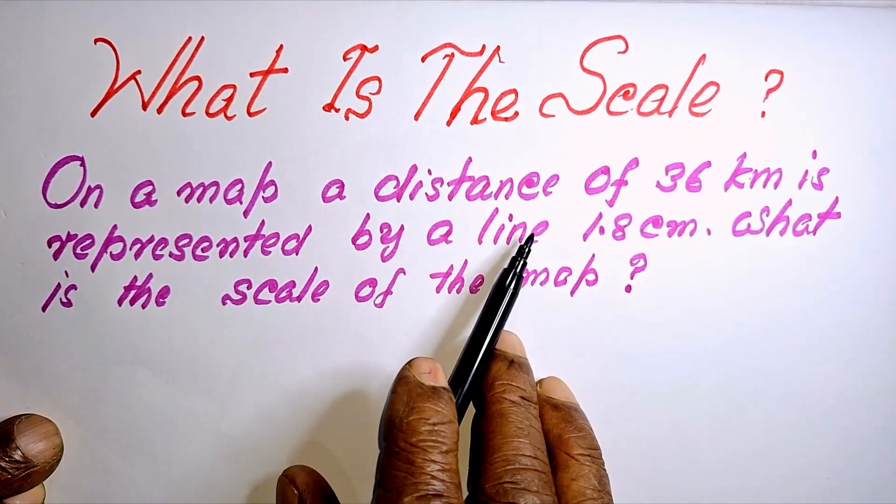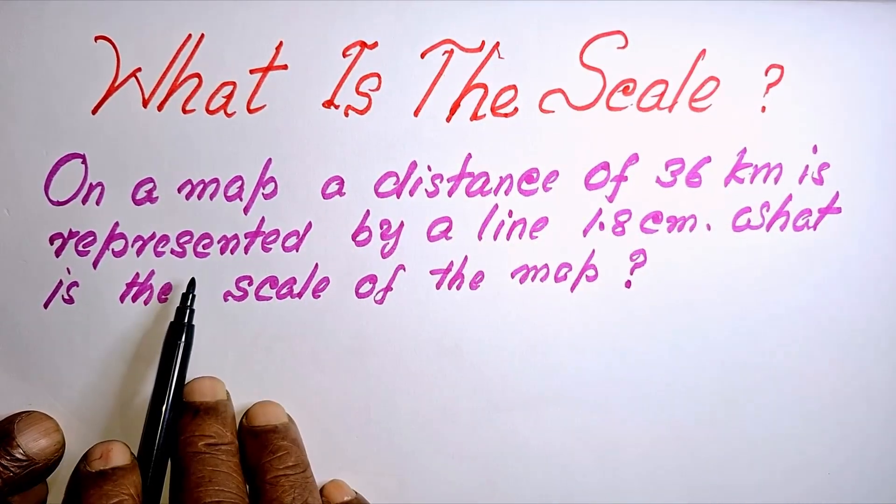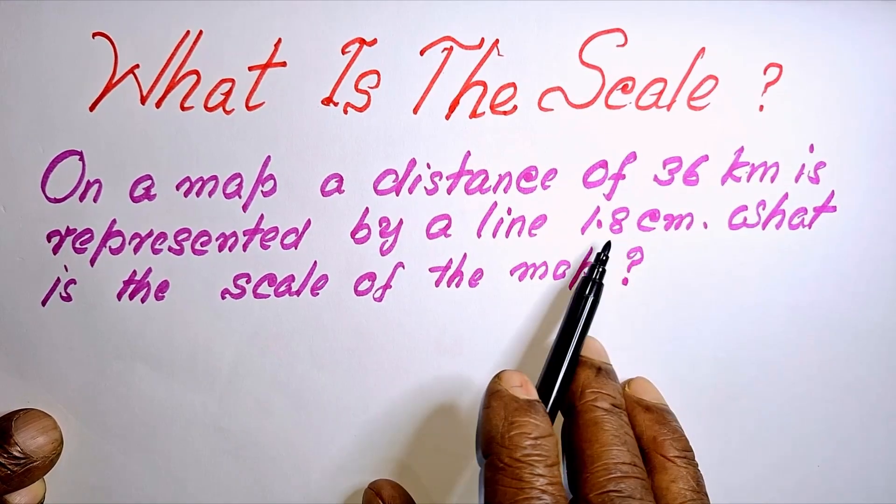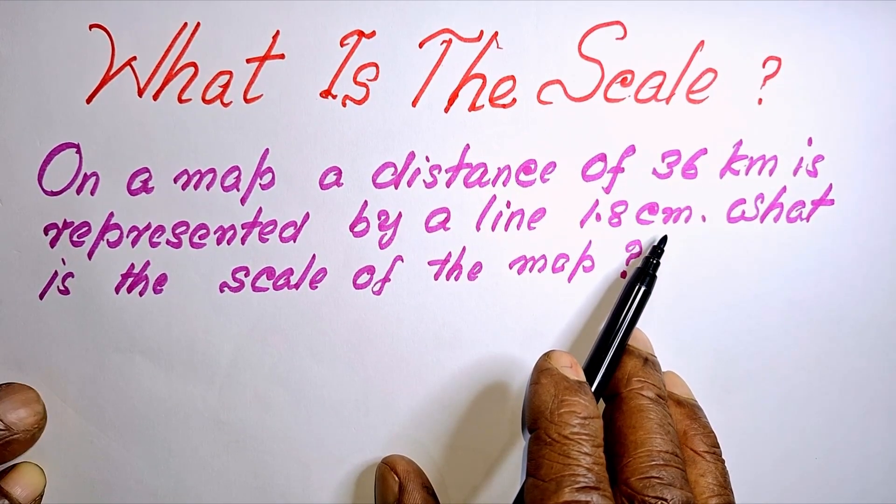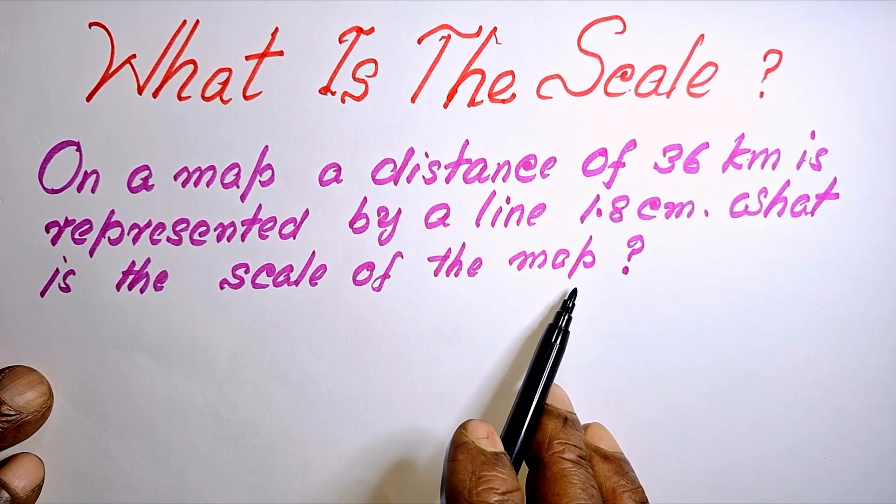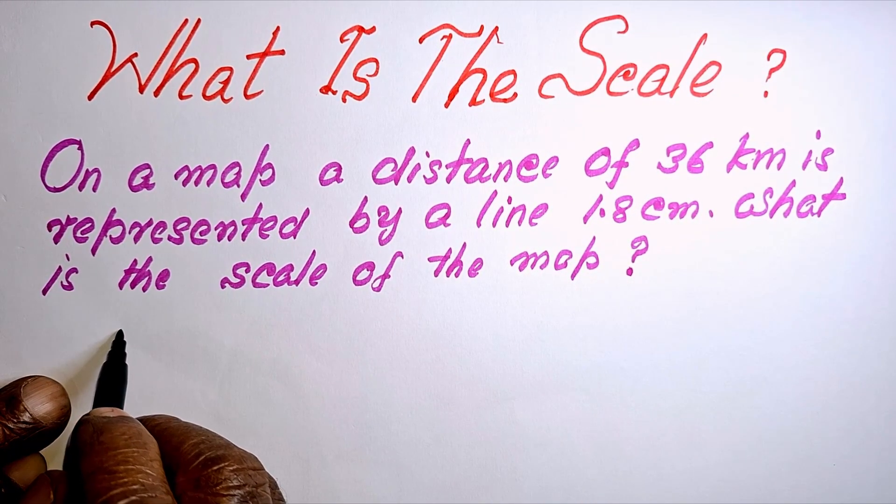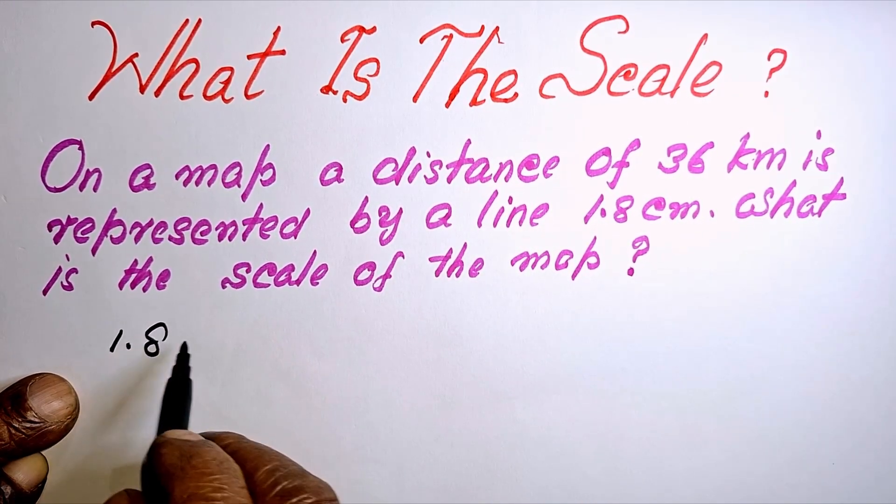What is the scale? On a map, a distance of 36 kilometers is represented by a line 1.8 centimeters. What is the scale of the map? So this means on the map, 1.8 cm